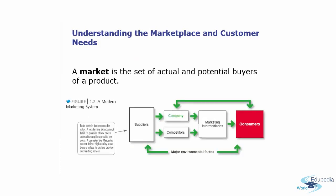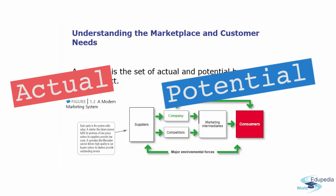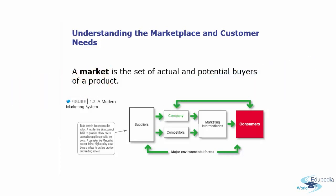A market is the set of actual and potential buyers of a product. Actual buyers and potential buyers — who are not yet your buyers — both fall under the target market. Each party in the system, including suppliers, consumers, competitors, and marketing intermediaries, adds value. For example, a supermarket cannot fulfill its promise of low prices unless its suppliers provide low costs.